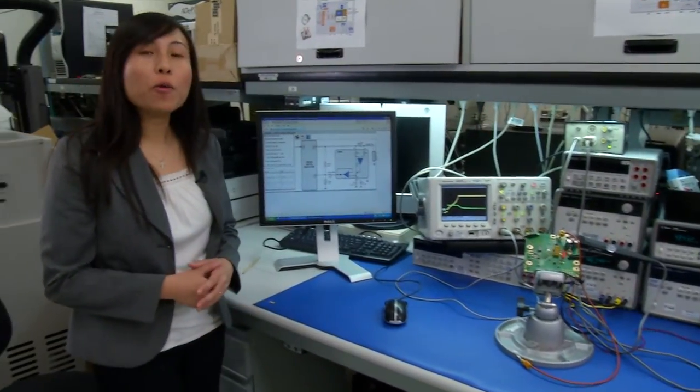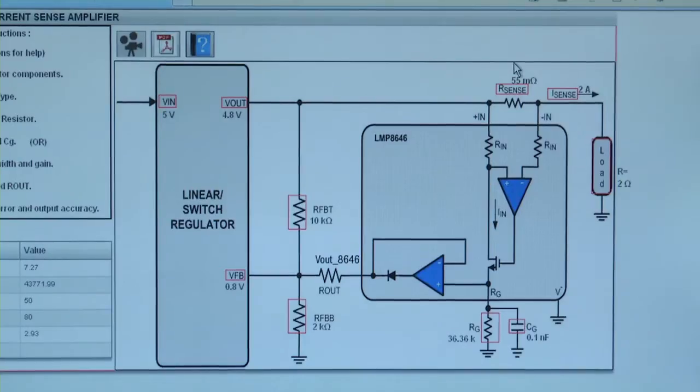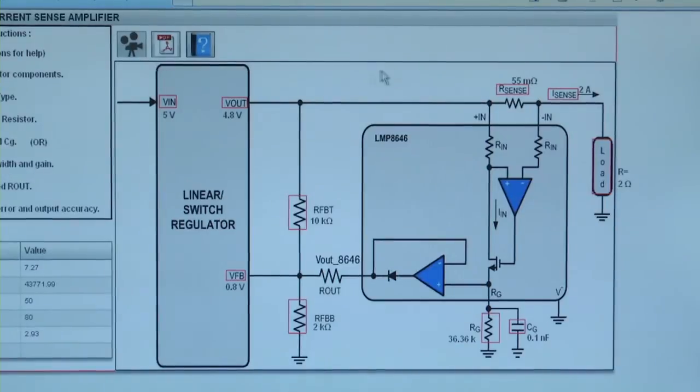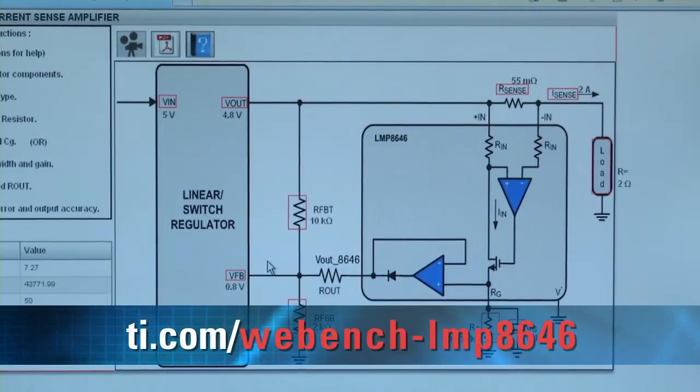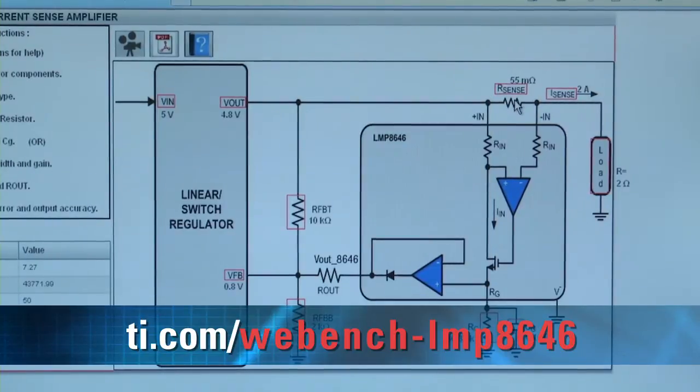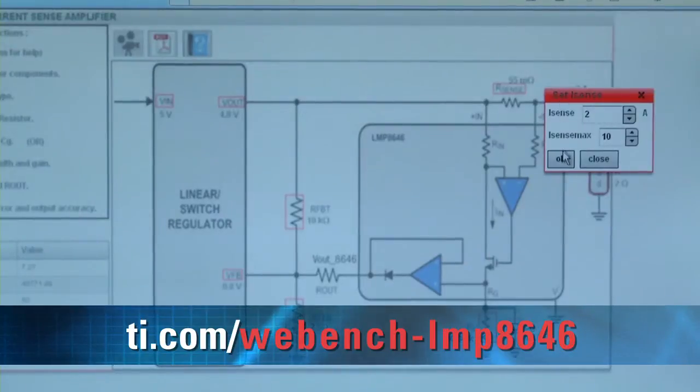You can go to the LMP8646 product folder or you can look at the addresses at the bottom of your screen. So if you log on what you will see is a configurable block diagram as I have shown you on the whiteboard. And you can click on each block in order to configure it.